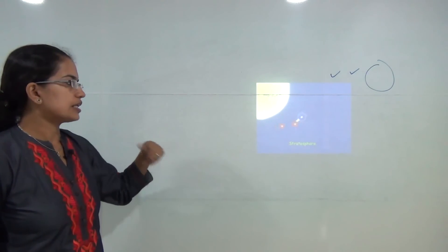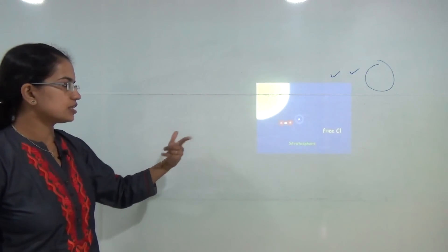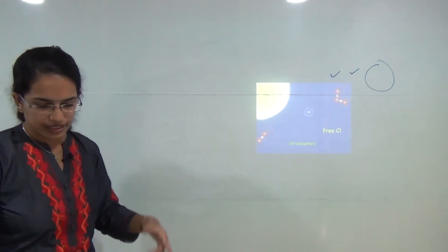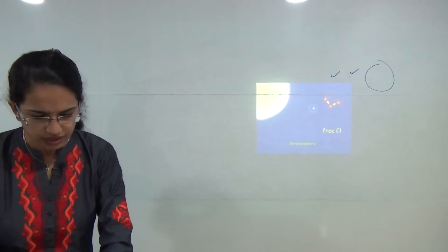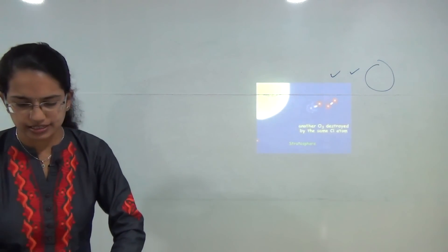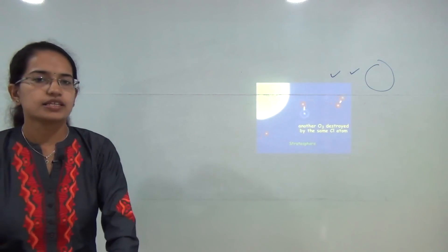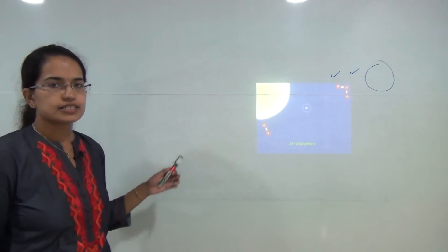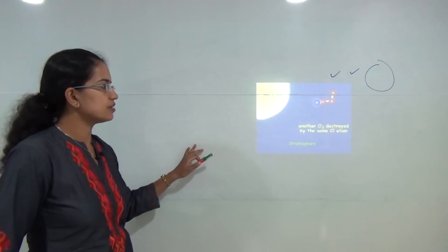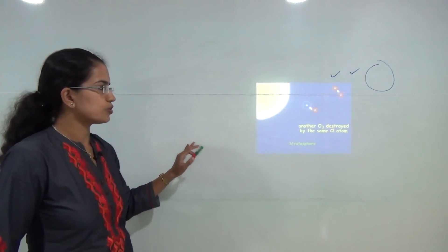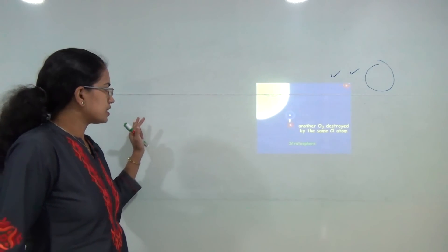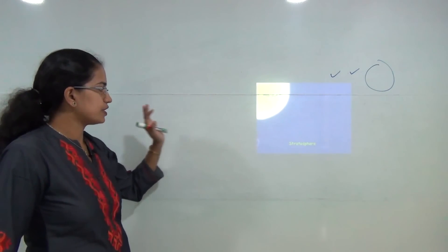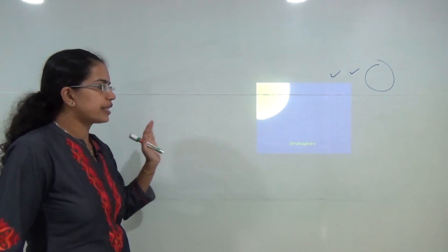This leads to continuous breaking down of ozone particles. September 16 is observed as the International Day to Preserve the Ozone. There is a breaking down of ozone that takes place in the presence of ultraviolet rays.